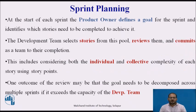At the start of each sprint, the product owner defines a goal for the sprint and identifies which stories need to be completed to achieve it. The development team selects stories from this pool, reviews them, and commits as a team to their completion. This includes considering both the individual and collective complexity of each story using story points. One outcome of the review may be that the goal needs to be decomposed across multiple sprints if it exceeds the capacity of the development team. The team also plans how they will work together to complete the sprint.